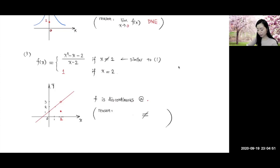And then when x equals 2, the function is defined to be 1. So when x equals 2, the y coordinate will be 1. So we make this a solid dot here.